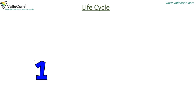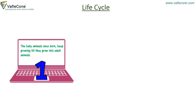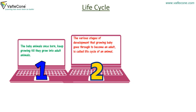Life cycle. The baby animals, once born, keep growing till they become adult animals. The various stages of development that a growing baby goes through to become an adult is called the life cycle of an animal.